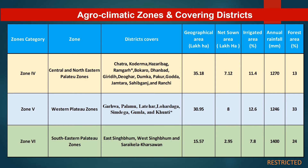For the Central and North-Eastern Plateau zone, covering districts Chatra, Koderma, Hazaribagh, Ramgarh, Bokaro, Dhanbad, Giridih, Deoghar, Dumka, Pakur, Godda, Jamtara, Sahibganj, and Ranchi: the total geographical area is around 35.18 lakh hectares, net sown area is 7.12 lakh hectares, irrigated area is around 11.4% of sown area, annual rainfall is around 1270 mm, and forest cover is around 13%.